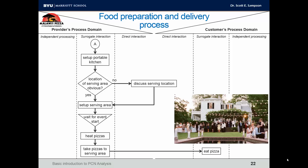They heat the pizzas and take them to the serving area. The customers — in this case the event guests — eat the pizza. Malawi's potentially monitors pizza consumption. The case points out that in some cases, people will come and ask for a specific type of pizza, so that might be a direct interaction step. They then heat those pizzas and continue serving accordingly.